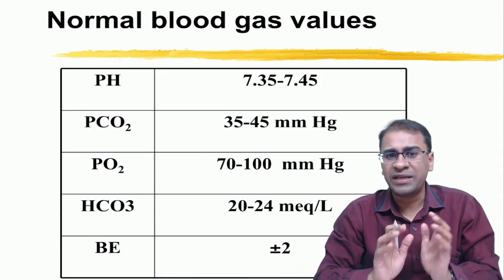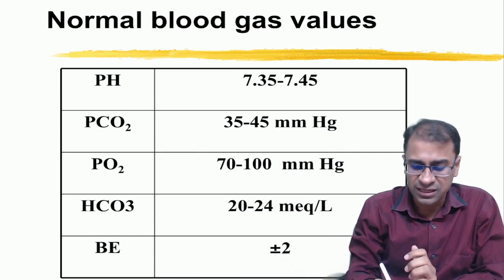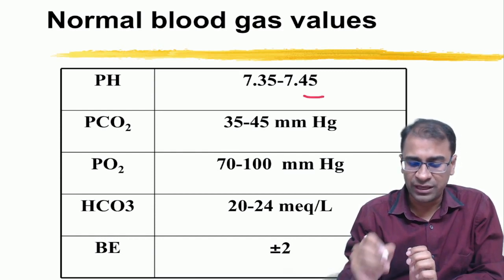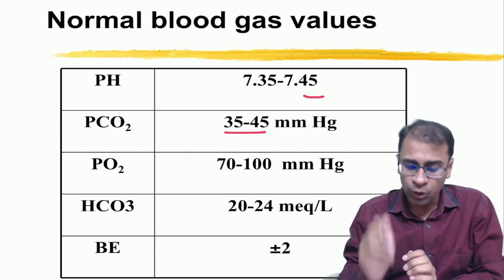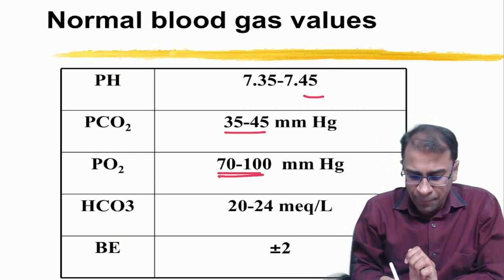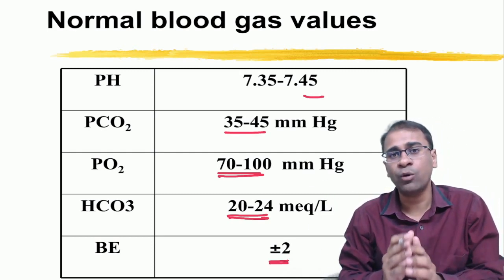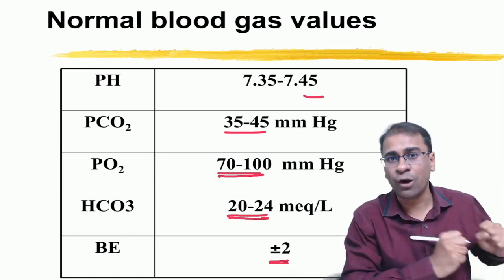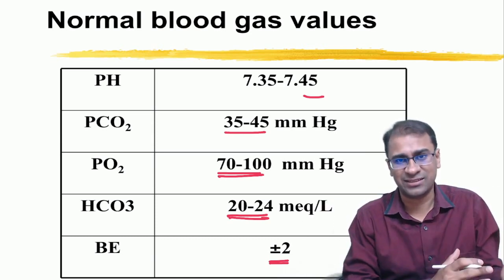If you look at the ABG, the few basic things you should understand start from the normal values. Normally the pH of a person is 7.35 to 7.45. The PCO2 varies from 35 to 45 mmHg. The PO2 is between 70 to 100 — 100 only when a person is on ventilators. Bicarb is 20 to 24 mEq/L. There is also base excess: a negative base excess means deficiency of base, and a positive base excess means more base compared to acids, i.e., more bicarb.